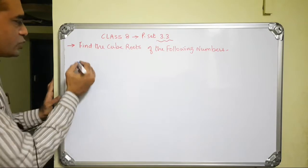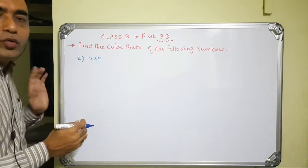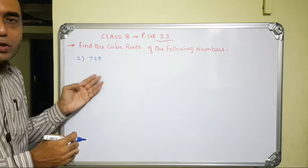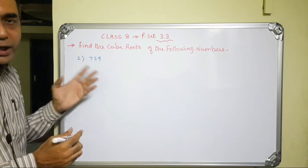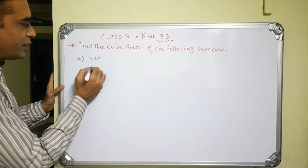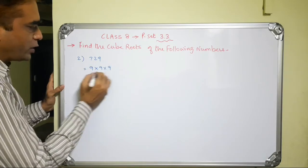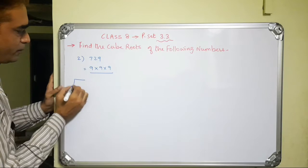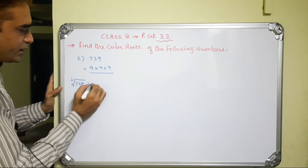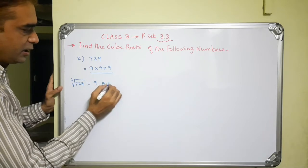The second sub-question is 729. We know that 729 is the cube of 9, so we can directly write 729 = 9×9×9. Therefore, the cube root of 729 equals 9. This is the answer.